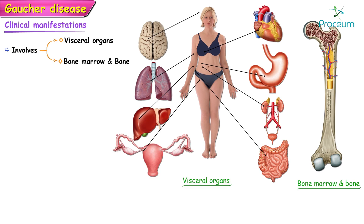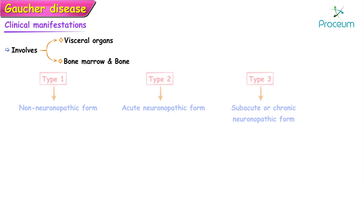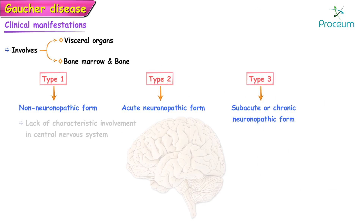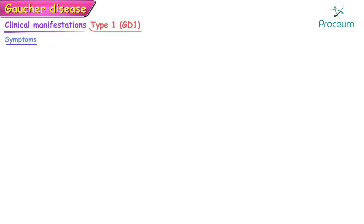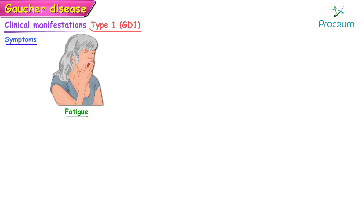Gaucher's disease involves the visceral organs, the bone marrow, and bone in almost all affected patients. However, Type 1 is distinguished from Type 2 and Type 3 by the lack of characteristic involvement of the central nervous system, although there have been studies documenting neurologic manifestations common to all types.